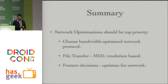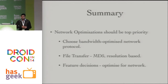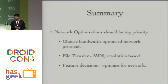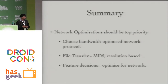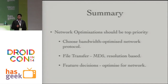In summary: network optimization should be your top priority if you are building for India. Think about people who are still experimenting with data. Think about how network connectivity is flaky in India and optimize for that. Choose a bandwidth-optimized network protocol — we use MQTT, and Facebook Messenger also uses it. Think about how you can optimize file transfers, maybe using MD5 or a unique ID-based approach. Always take care of the resolution the client device is on. Think of the features you've implemented and figure out whether optimizations are still possible.